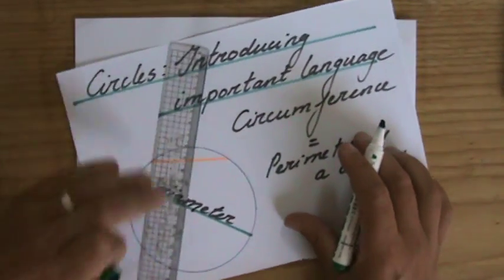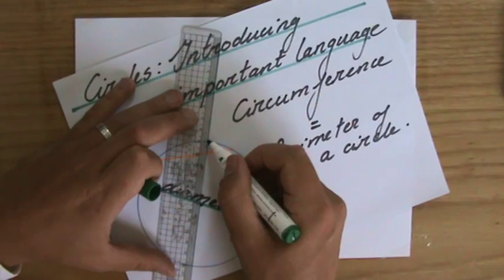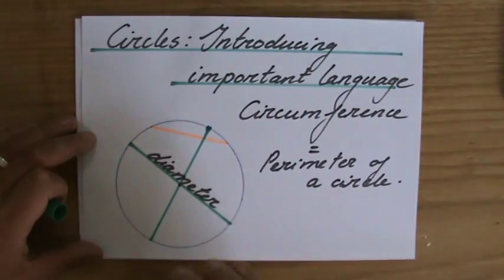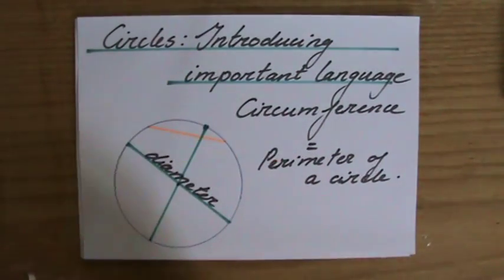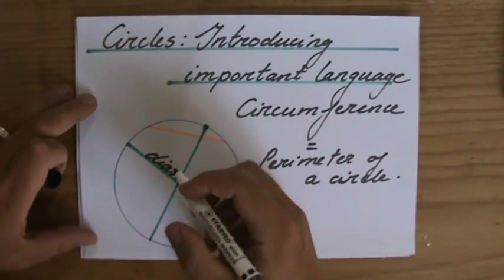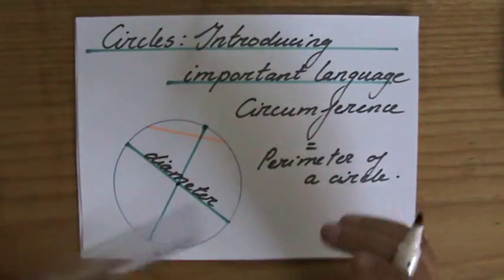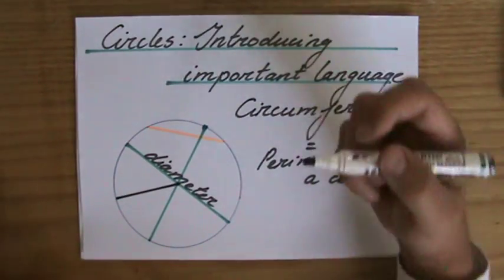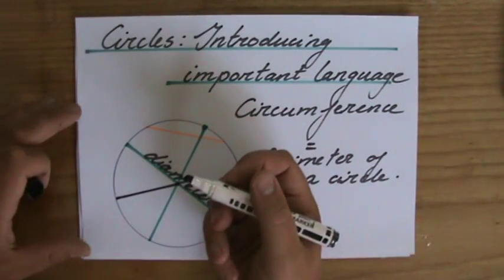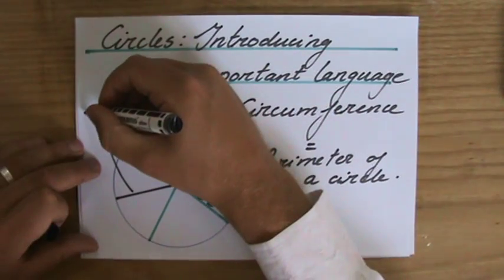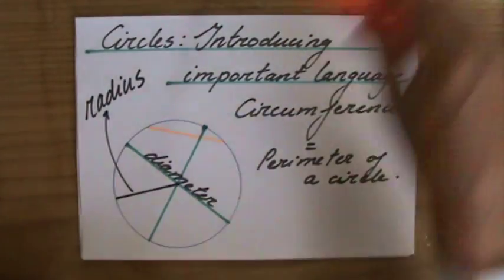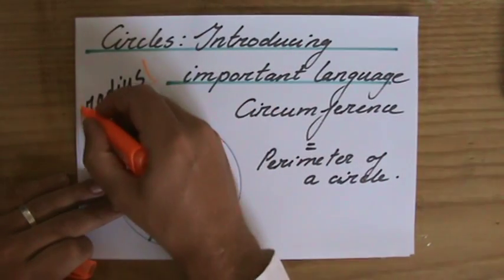So the length of the diameter is everywhere the same. Even from this point of the circumference through the midpoint to the other side of the circumference, that length will equal that length. And then the last word you need to be familiar with, a very important word, is... Well, if I am at the midpoint, and I go to the circumference over there, the length of that line we call the radius. And that is a really important word, and you will encounter it all the time.